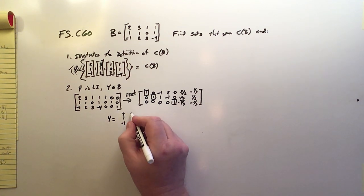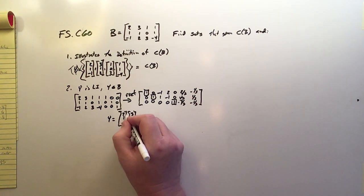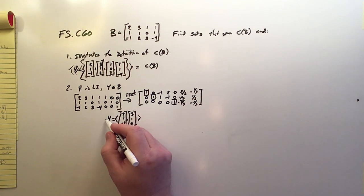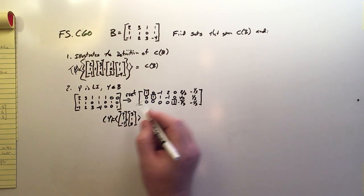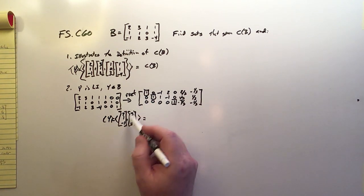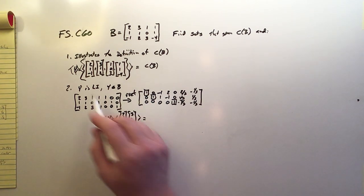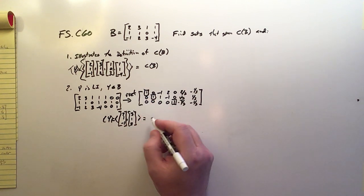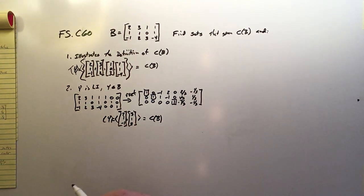So now my Y is actually going to be equal to 2, 1, negative 1, 3, 1, 2. And these vectors span the same set. So that's the spanning set. They span the same set now as this one, but they're linearly independent, and of course they're much easier to apply than this great big set. So this would also equal the column space of B, okay?